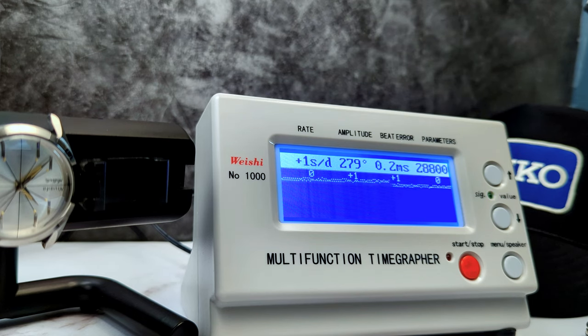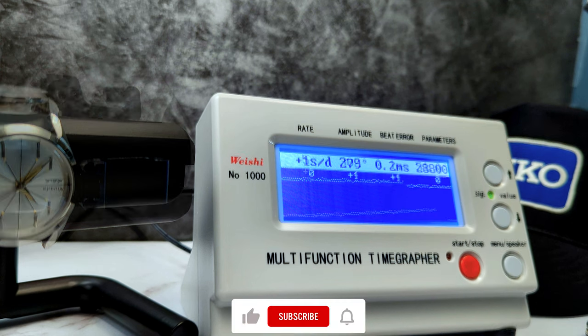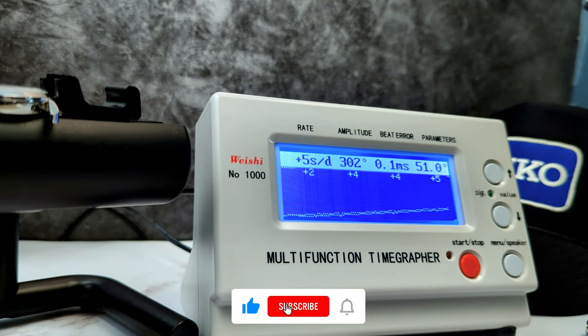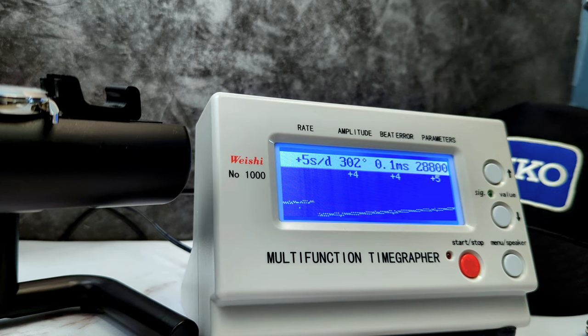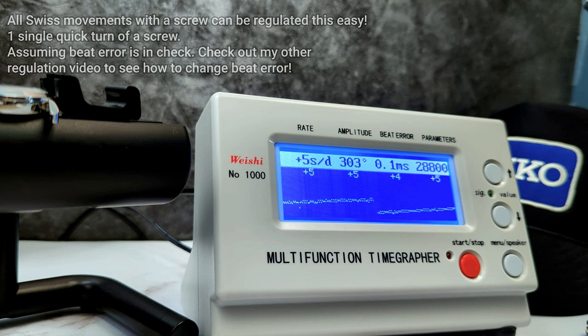Now let's check out dial up. It's going to be around plus four to plus six in that range. And if we did it perfectly, it'll be plus five after letting it sit for 20 minutes on the time grapher. Amplitude very strong at 300, little bit error at 0.1, and basically the watch is regulated.